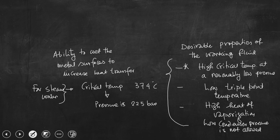Low triple point temperature basically means the freezing temperature should be well below atmospheric temperature — that is what is ensured. High heat of vaporization, as already told, ensures that the weight of the working fluid should be minimum. And finally, low condenser pressure is not allowed — as discussed in the previous class.